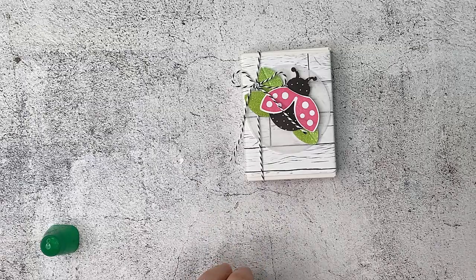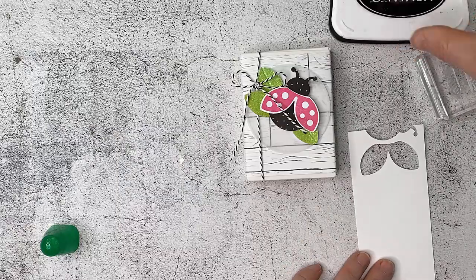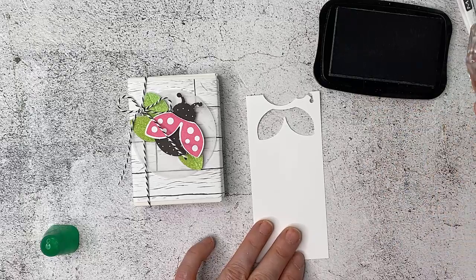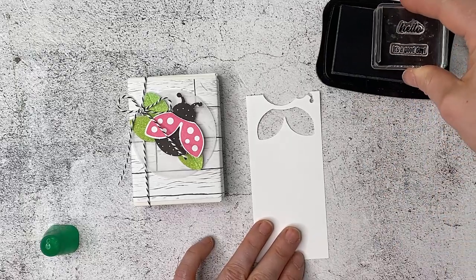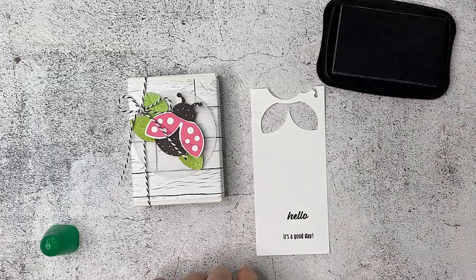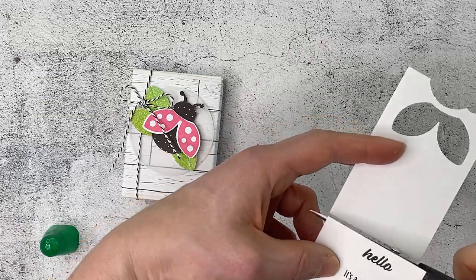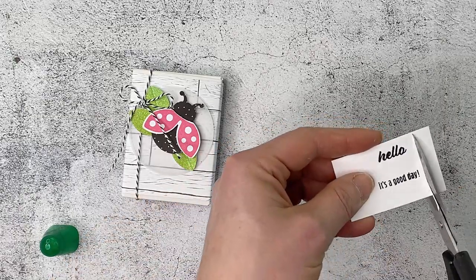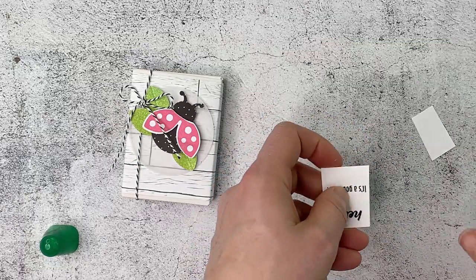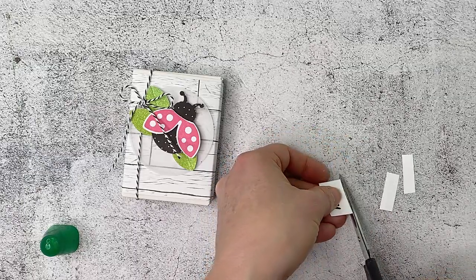Now just two more things, we're just going to stamp our words and I have the hello it's a good day mounted onto the same block. Just on the rest of your white I'm just going to stamp that there in memento black and then I'm just going to use my scissors and neatly cut them out but don't worry about them being overly exact. Just something like that.